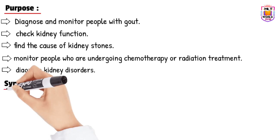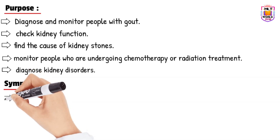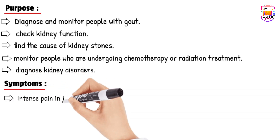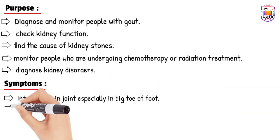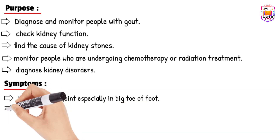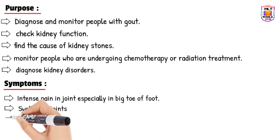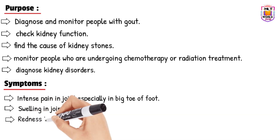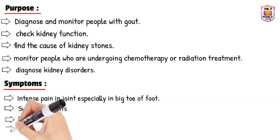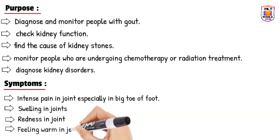Based on symptoms, the doctor will request a uric acid test. The key symptoms are: intense pain in the joint, especially in the big toe of the foot; swelling in the joint; redness in the joint; and a feeling of warmth in the joint area.